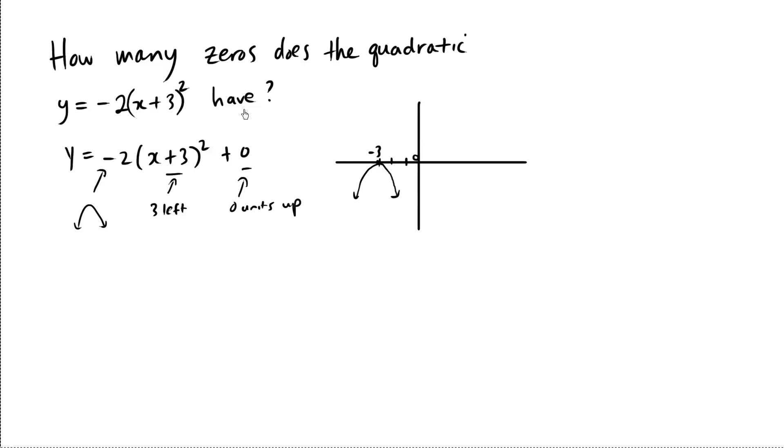So in terms of the number of zeros, the word zero means the actual y equals zero position, or the roots or the solutions of the graph. You can see it only has one zero. It only has one solution, one root. So the answer is one.